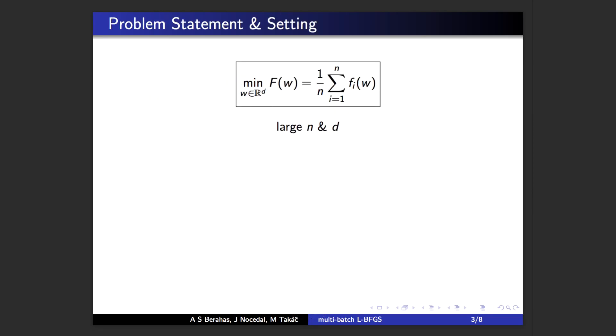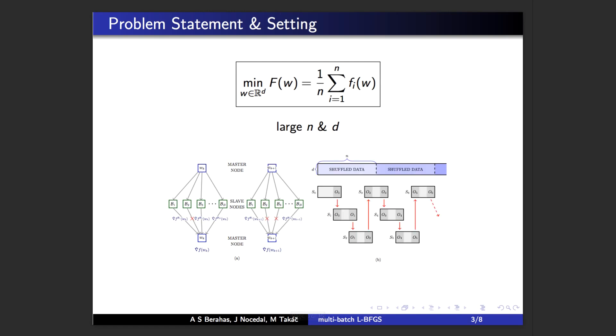Before talking about the method, let's take a step back and look at the problem we are trying to solve. We consider the minimization of a finite sum in the regime where both n and d are large. In this regime, it is common to either distribute the gradient computation or to use a subset of the data at every iteration.